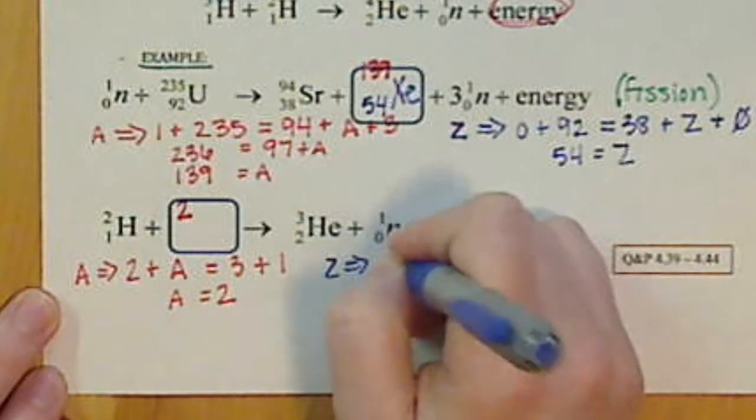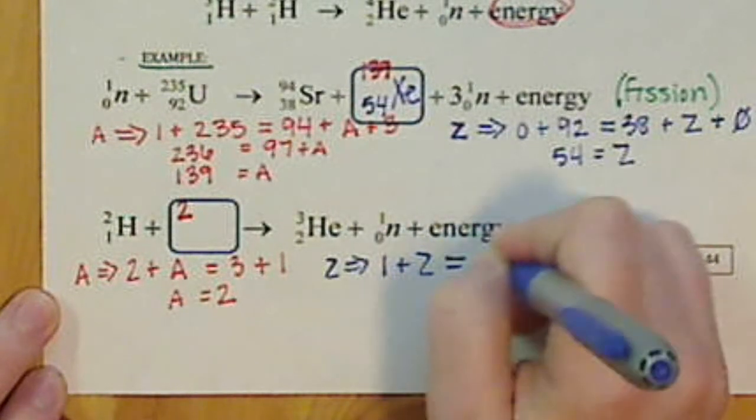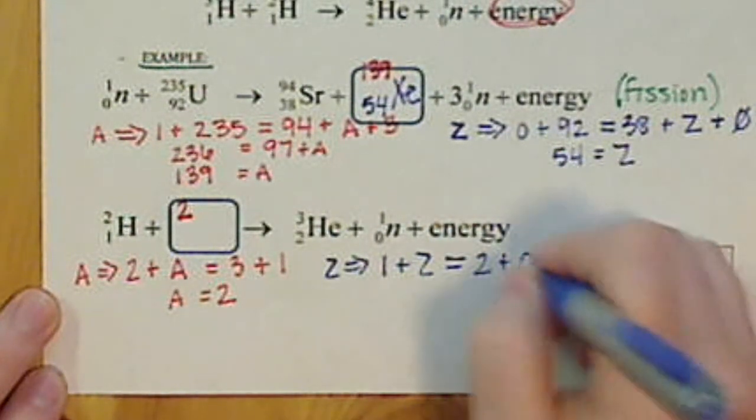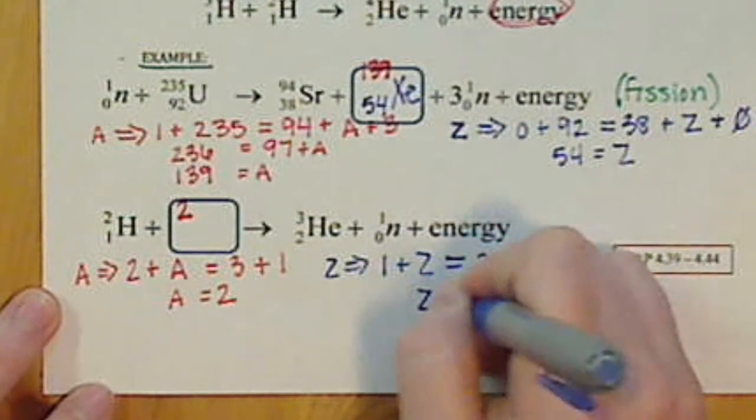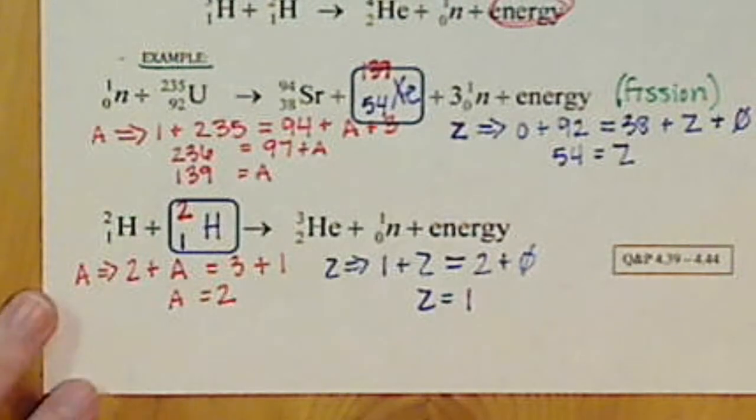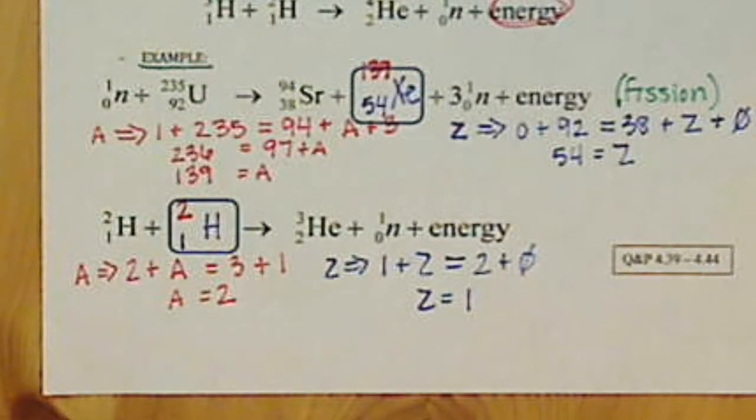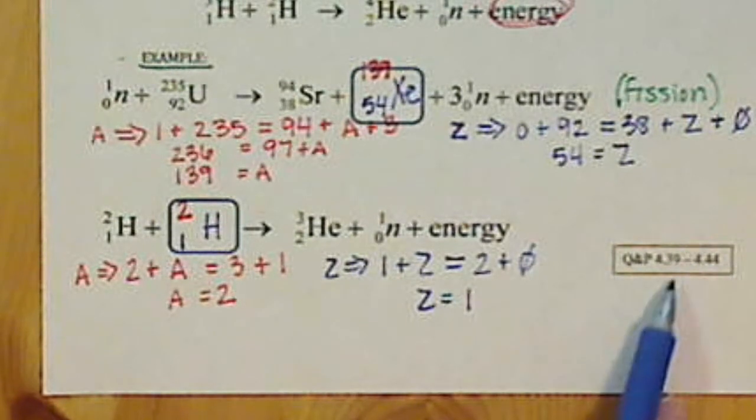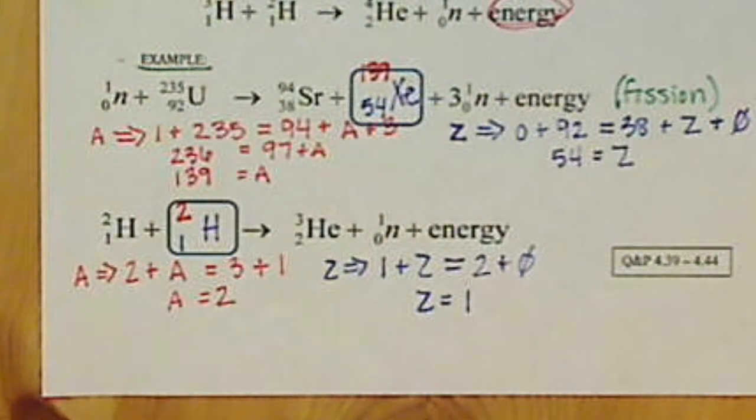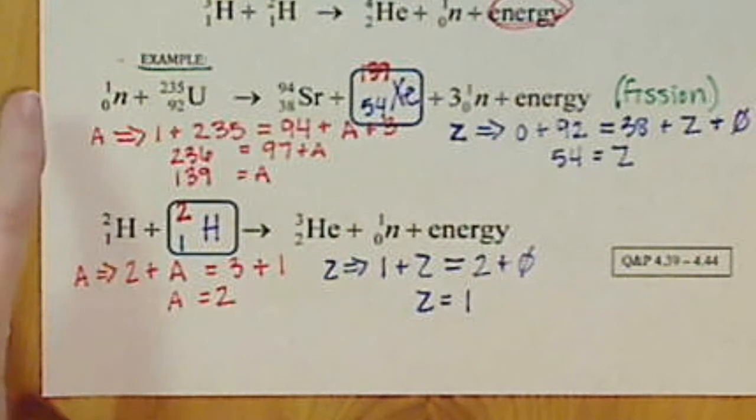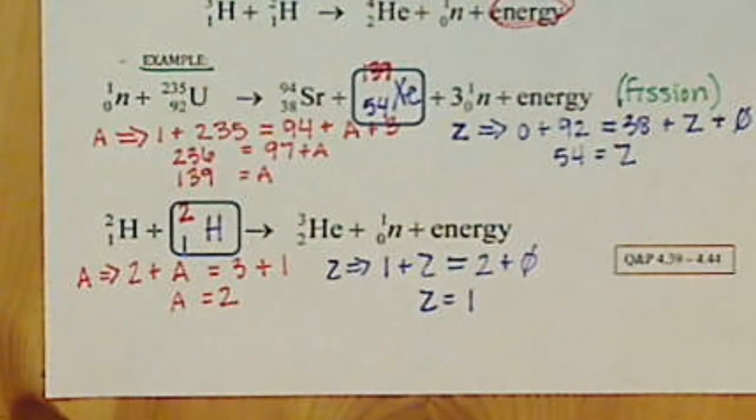So we have 1 + Z is equal to 2 + 0. So Z is equal to 1, which is hydrogen. So QMP there for you to work through. Definitely practice these, especially your fission examples. Those are usually the more challenging symbols to come up with. But definitely all you just need is practice and working through the algebra. And then we can do the algebra.